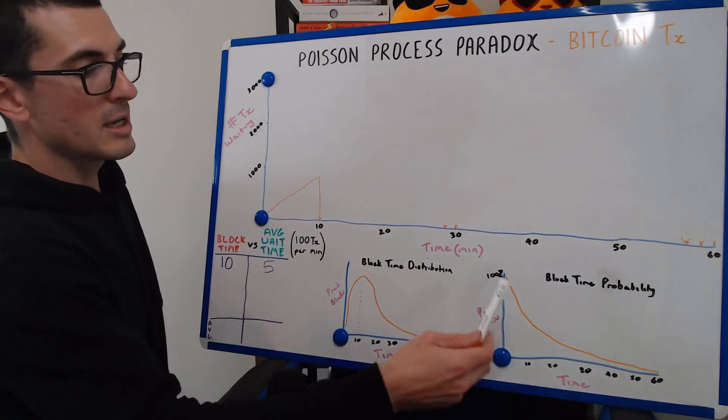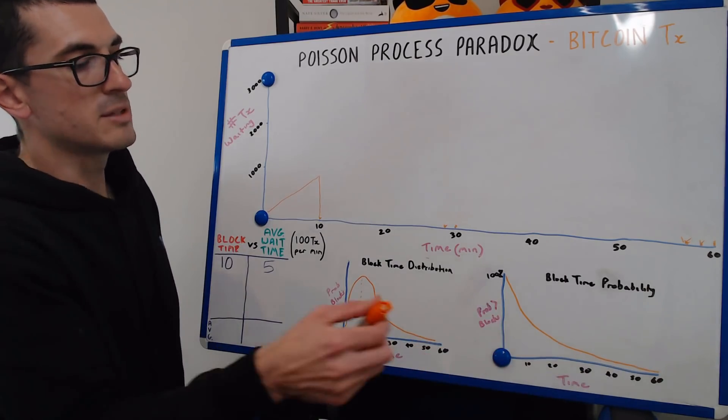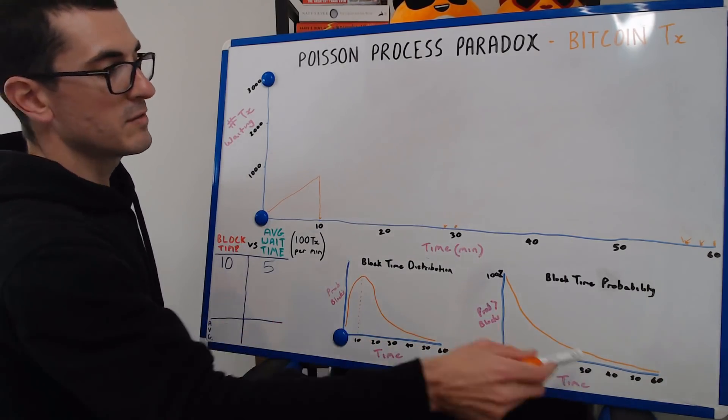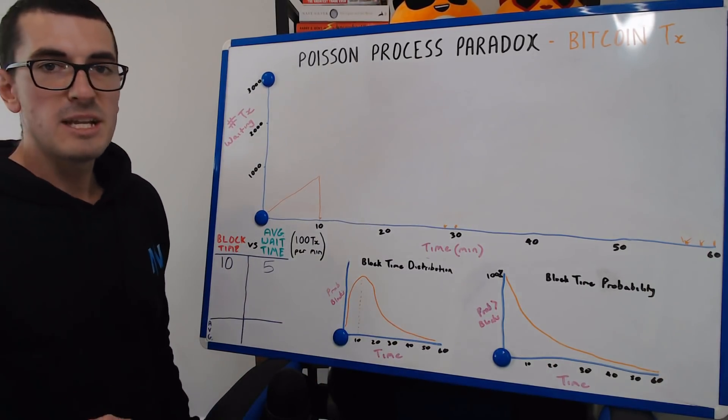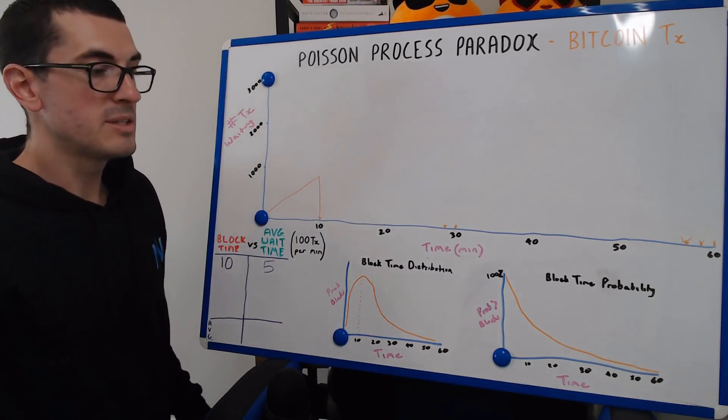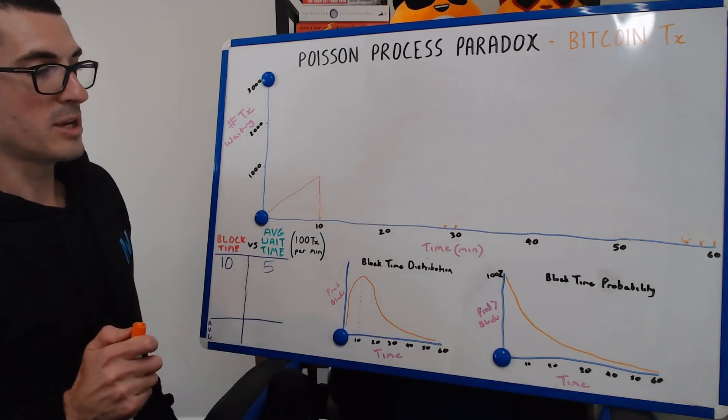And then the longer a block takes to mine, the lower the probability. So we do have blocks that take 50 minutes occasionally, but the chances of that might be 1%. So that's all that first chart over there is expressing.